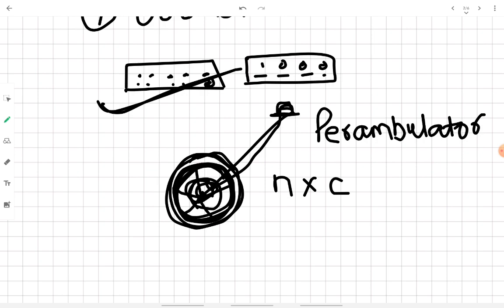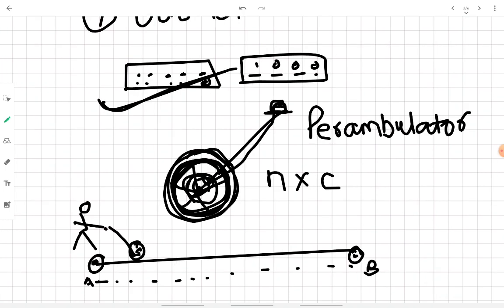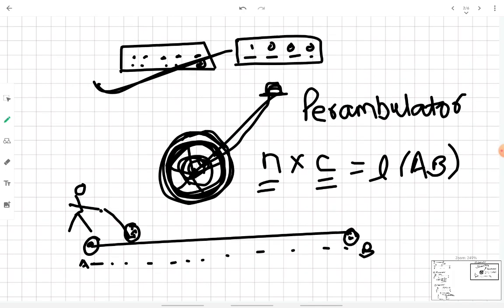The person operates the perambulator by holding the stick and traveling from point A to point B. The perambulator records the number of revolutions and, using the preset circumference of the wheel, converts these into a linear distance AB.